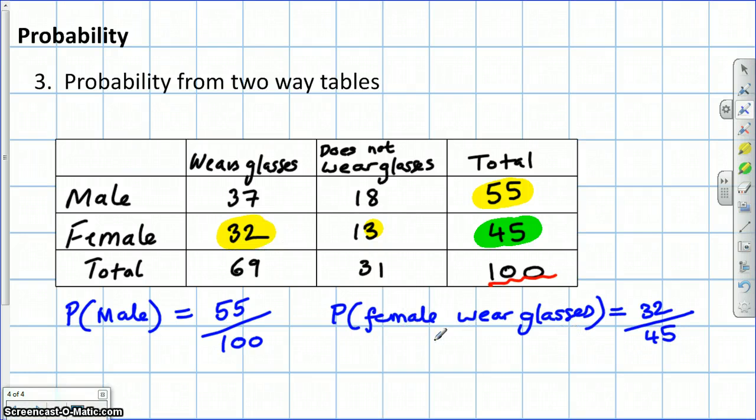So be careful when using two-way tables to work out empirical probability, that you read the question carefully. If it says, given that they're such and such, then the denominator's not going to be this total here.